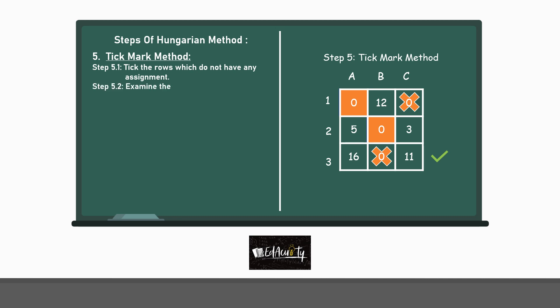Step 5.2. Examine the ticked row and tick the columns that have the crossed 0s. See that in row 3, column B has a crossed 0. So, tick that column B.